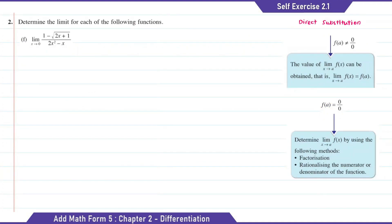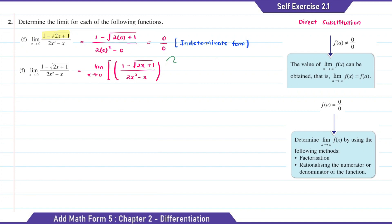Question F: we're going to substitute x with 0 as x approaches 0. The answer of this will equal to 0 over 0. To find the limit value for F, here we need to rationalize the numerator.